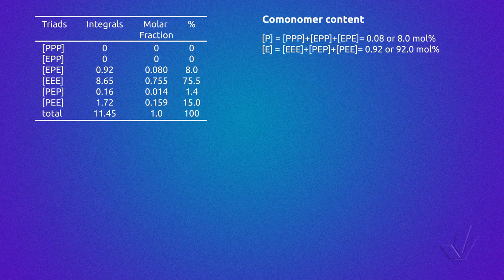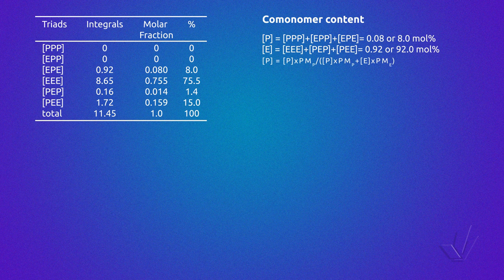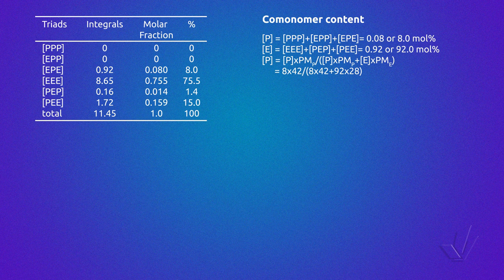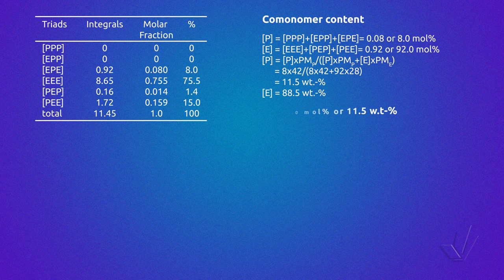NMR gives the molar fraction or molar percentage, but to obtain the mass fraction or mass percentage, we multiply the molar amount of each monomer by its mass. In this case, we multiply 8 by the weight of propylene (42 g/mol) and 92 by the weight of the ethylene unit (28 g/mol). This particular copolymer has 11.5 weight percent of propylene and 88.5 weight percent of ethylene.